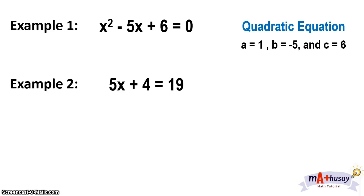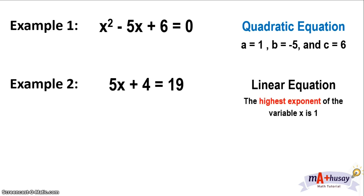Example number two: is 5x plus 4 equals 19 a quadratic equation? No, it is a linear equation because the highest exponent of the variable x is 1.